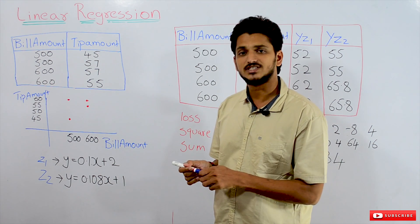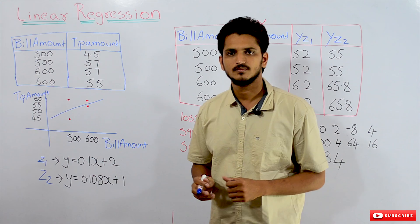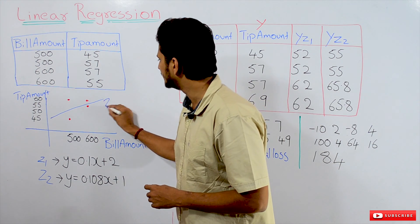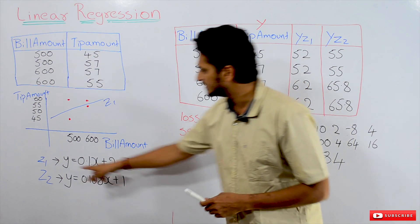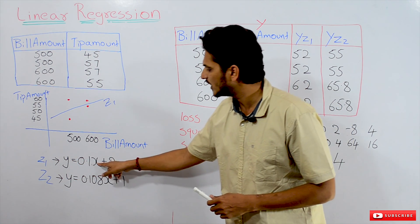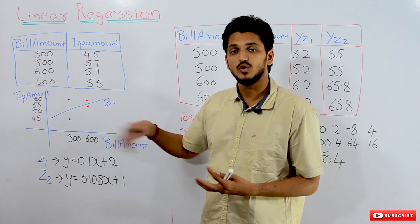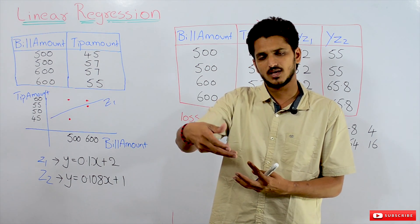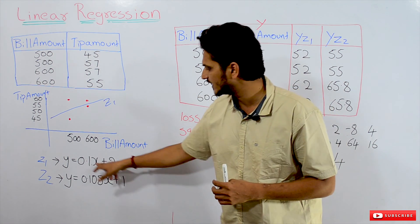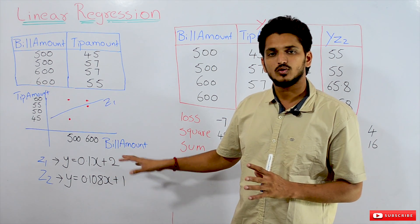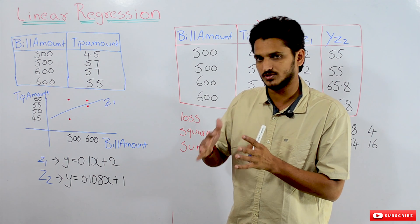Let's assume that Z1 is a line passing through this data. This line Z1 has the equation y = 0.1x + 2. We will understand how to identify this line in our next class. For now, let's assume we identified a line with equation y = 0.1x + 2.